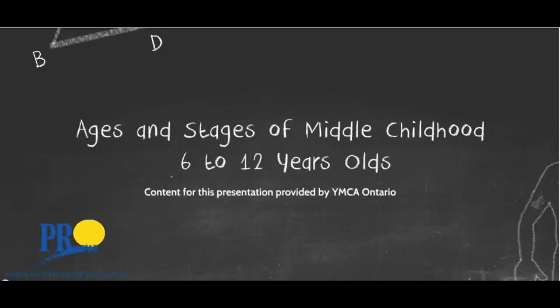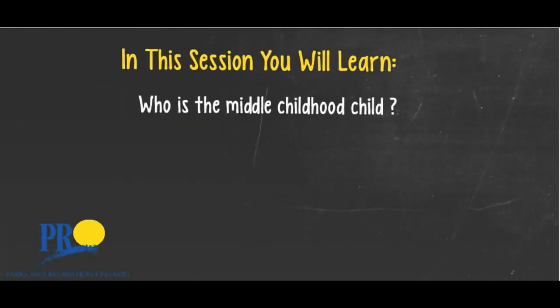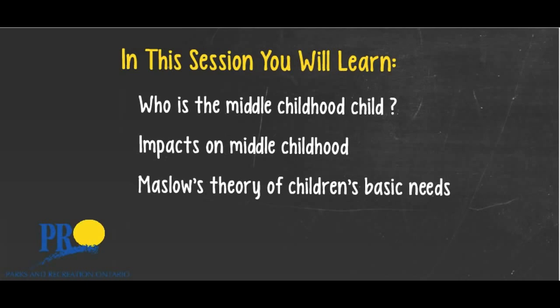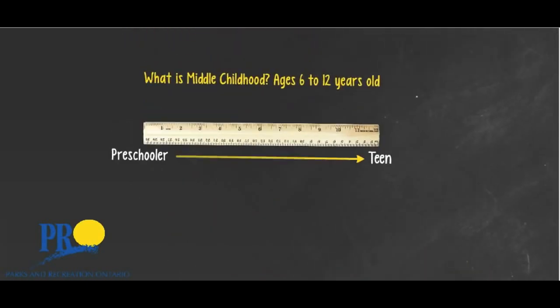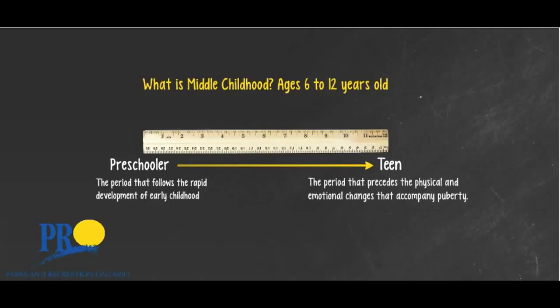Welcome to this session on Ages and Stages of Middle Childhood. In this presentation you'll learn who is the Middle Childhood Child, impacts on Middle Childhood, Maslow's Theory of Children's Basic Needs, and the Seven Domains of Development. Middle Childhood includes children between the ages of 6 to 12 years old. It's the period that follows the rapid development of early childhood and precedes the physical and emotional changes that accompany puberty — a time to explore the world and themselves.